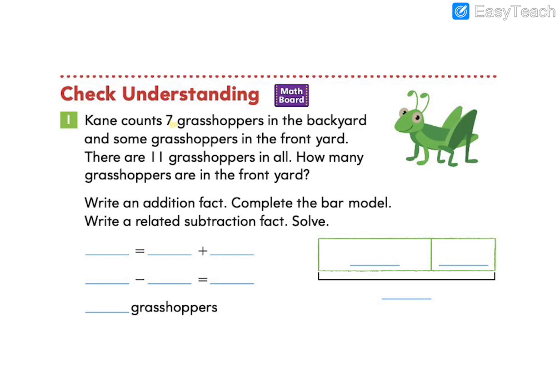So we know that Kane has seven grasshoppers in the backyard and some in the front yard. Do we know how many are in the front yard? We don't, but we know in total there are 11 grasshoppers in all. Go ahead and complete your bar model first and then write your addition and related subtraction facts. Think about the pieces that you know and the pieces that you're missing.